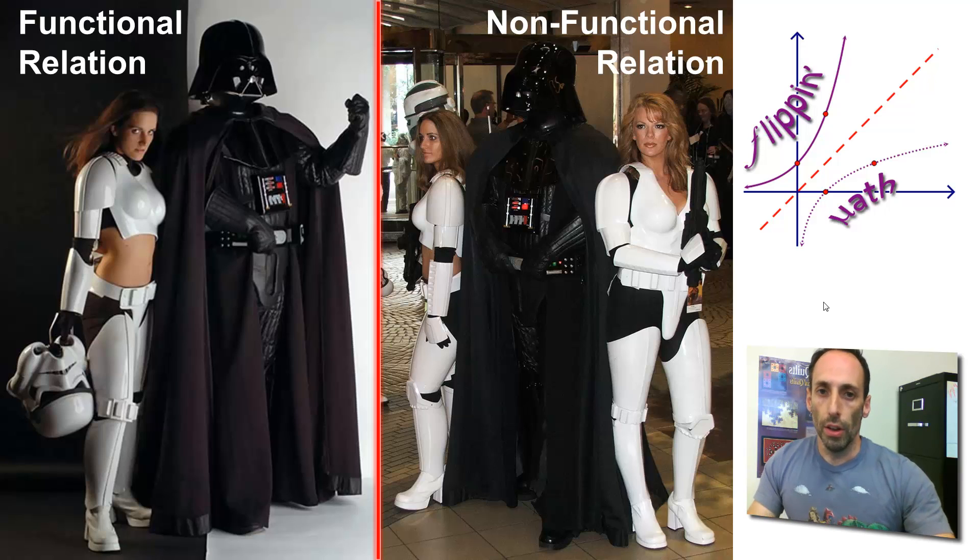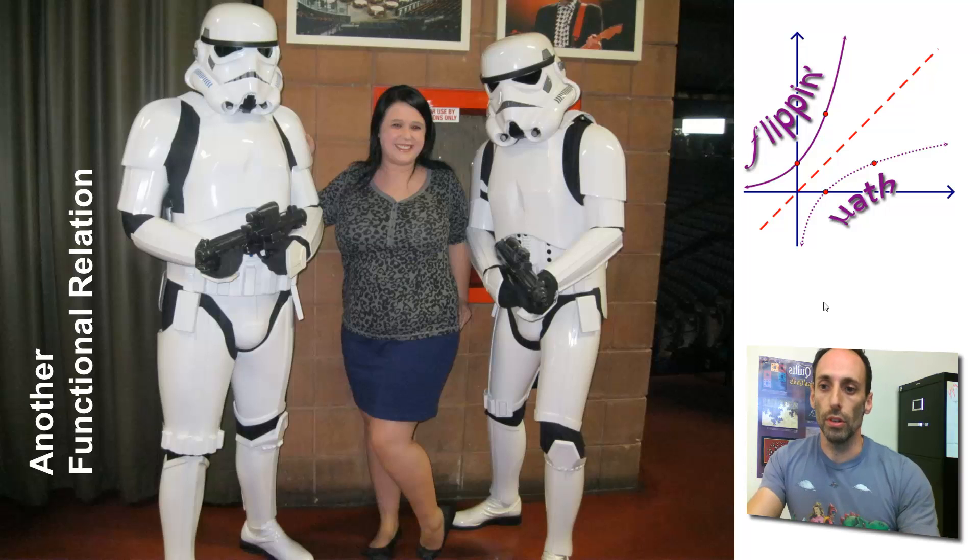Let's look at another case where this is still a function. Which ones are the inputs? The inputs are the boys. So we're going to say the stormtroopers this time are the boys. The stormtroopers are the boys, and then that girl right there in the middle is taking a picture with it. That's the output. That output has two inputs that she's paired up with. And that's still a function. This is like the parabola case. So keep that in mind, that it's still a function.